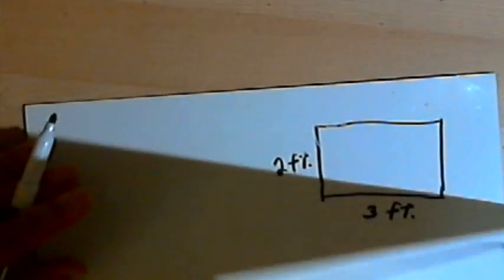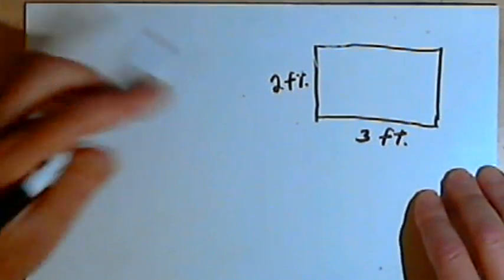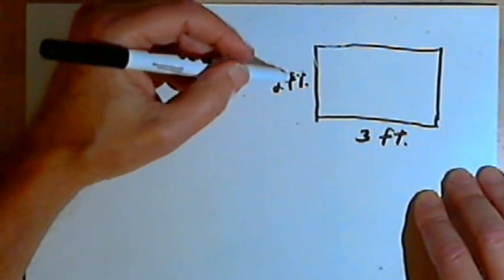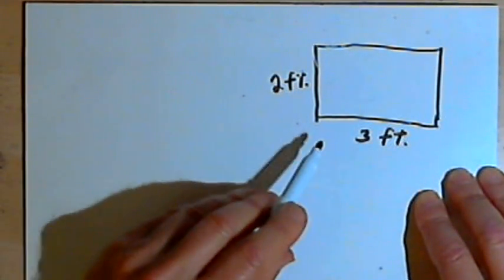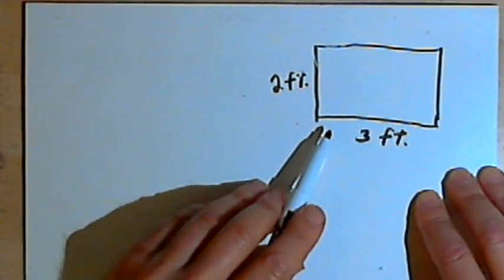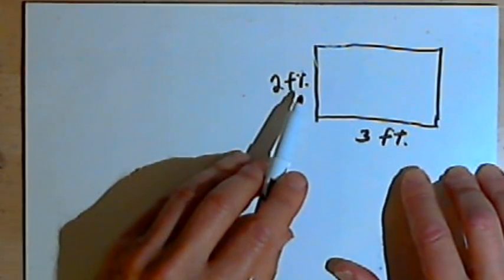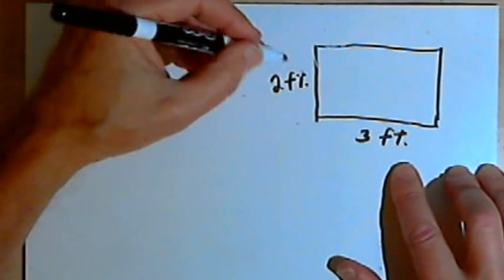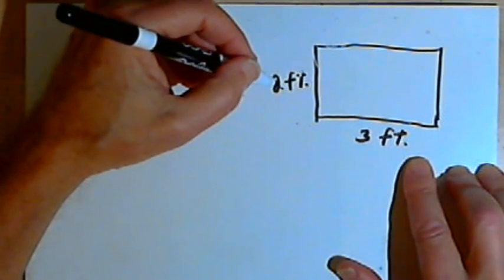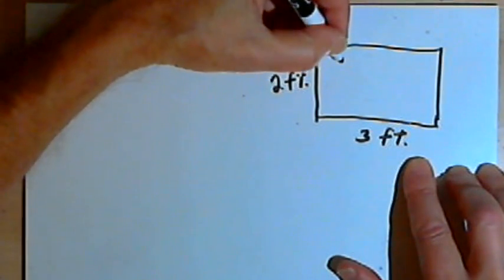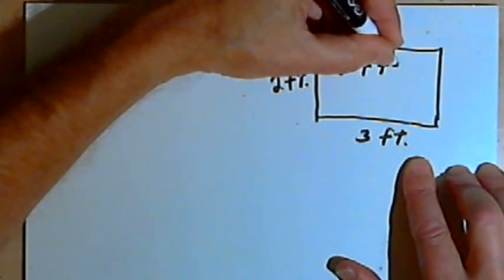Here's the first problem. Let's say I've got a rectangle and its dimensions are 2 feet by 3 feet, and I want to find its area in square inches. I know how to find the area in square feet — I would just multiply the length times the width, so I'd multiply 2 feet by 3 feet, and that would give me 6 square feet.